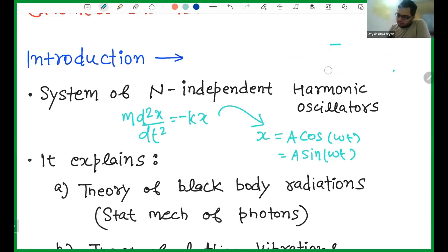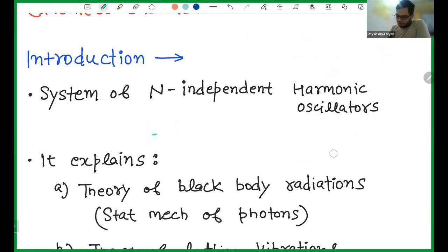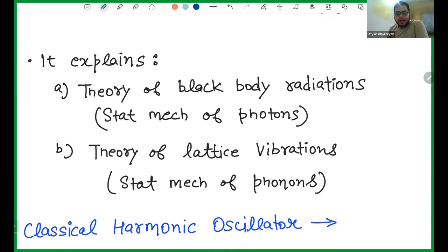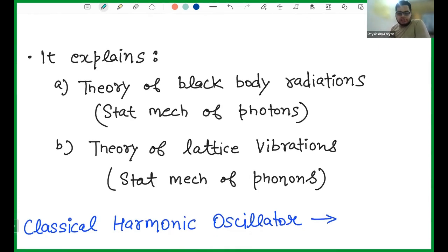Now we are considering N such harmonic oscillators — one, another, third, fourth — so you have N such mass-spring systems you can imagine. These kinds of calculations are very important if you want to explain black body radiation, because black body radiation is nothing but the statistical mechanics of photons and how photons behave. It is also very important for the theory of lattice vibrations. In black body radiation, we assume that when a body emits radiation, the atoms inside it are vibrating harmonically.